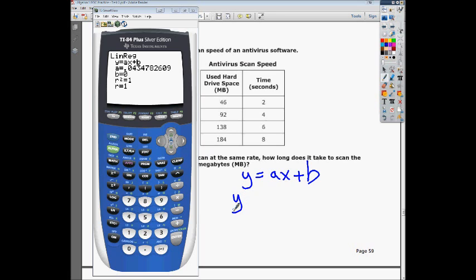This means if I plug in an X value, and my X's were my first group, so that would be my independent variable of hard drive space, then I need to multiply it by a slope of 0.0434782609, it probably goes on but they cut it off there, times X plus 0. And in this case, my X value would be 437.